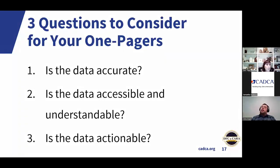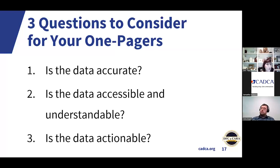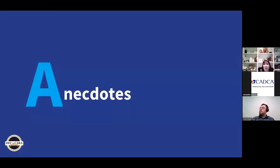Some questions to consider for your one-pagers: First, you have to make sure the data is accurate, and everything that you do needs to be cited — you lose your credibility right away if you go in with inaccurate data. Second, is the data accessible and understandable? Somebody very quickly can glance at the one-pager and understand exactly what we're trying to tell them. And is the data actionable? Do we want to go in and ask that they fully fund the Drug Free Communities program based on the amazing outcomes? You have to make sure the data matches back to what you're trying to accomplish and what you're trying to get changed.